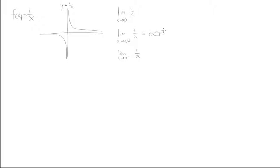For notation purposes, you write that the right-hand limit is infinity. Likewise, for the left-hand limit, we can see it's going down towards negative infinity, so that equals negative infinity. Technically these limits don't exist because they're not approaching a specific number, but you write infinity or negative infinity just for reference. Because the two sides aren't approaching the same value, the overall limit of 1/x as x goes to 0 does not exist.